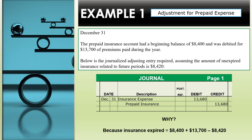Now you may be wondering where did this $13,680 even come from? Well, this is the amount of insurance that has expired. The information provided gives us all the amounts we need to make this adjusting entry. First, we have the $8,400. Then we add the $13,700, and then we subtract the unexpired insurance of $8,420. This gives us the $13,680 amount that pertains to our adjusting entry.